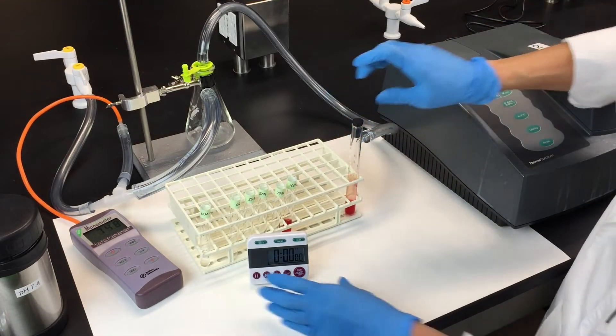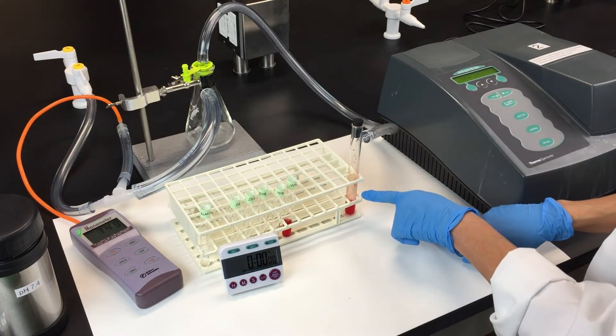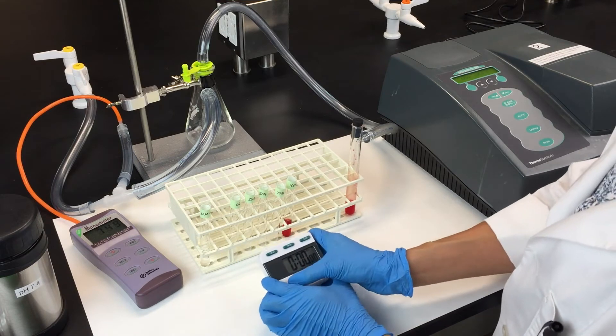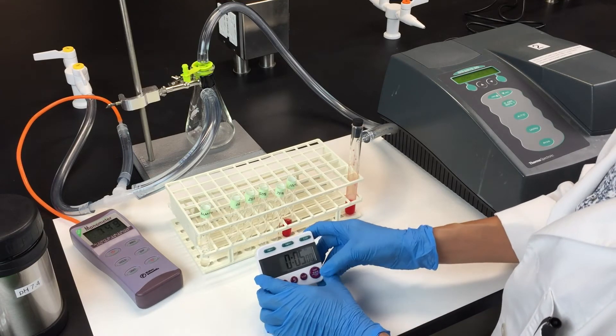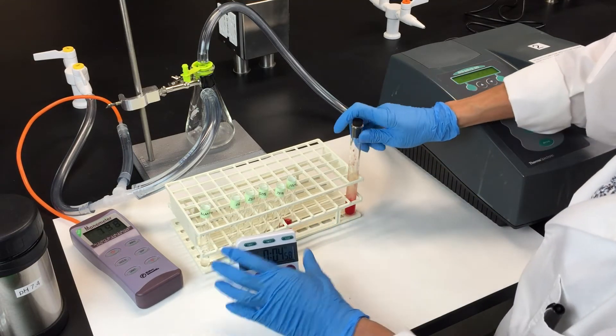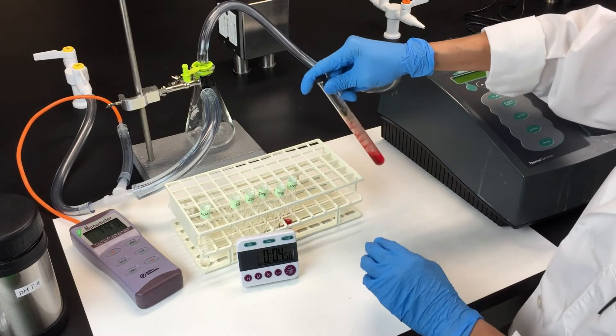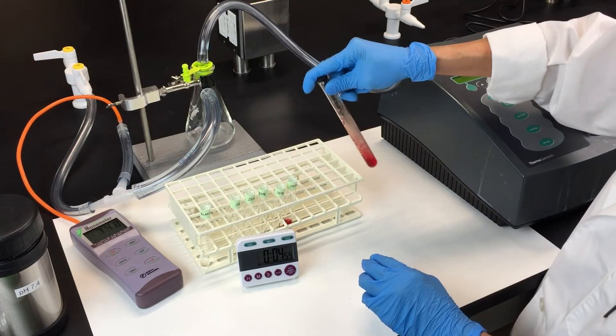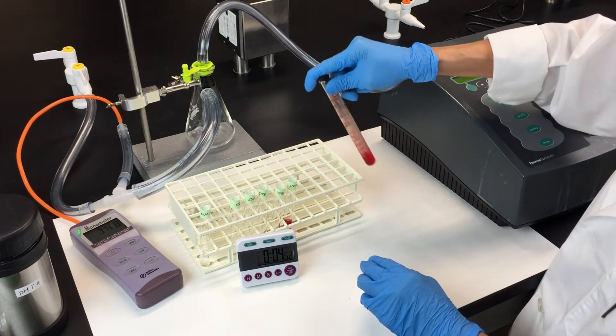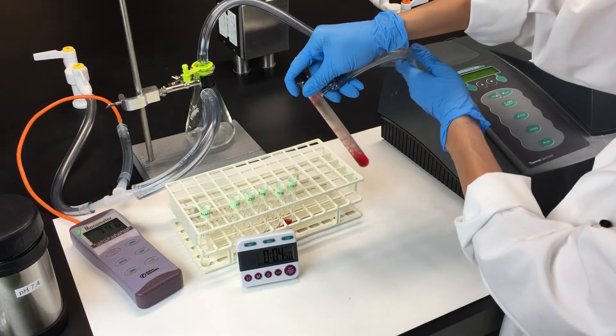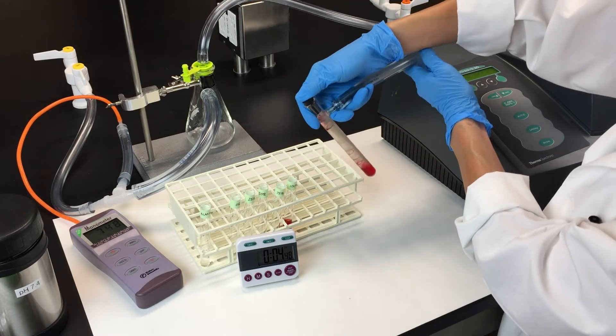This will cause the hemolysate to bubble up and jump in the tube. Set your timer for five minutes, then pick up the tube and shake it carefully. You want to keep it more upright because the high vacuum pressure will cause the hemolysate to bubble up quite a lot and you want to try and keep it out of the vacuum tubing.